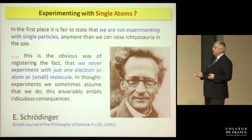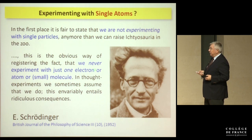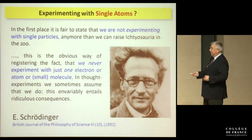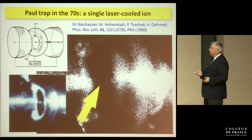Schrödinger famously said in the 1950s that it is fair to state we are not experimenting with single particles any more than we can raise dinosaurs in a zoo, and that experimenting with just one electron or atom invariably entails ridiculous consequences. However, we hopefully proved him wrong by making single atoms visible. Here is a picture of a single ion, and here are three ions in a miniaturized trap with just one millimeter ring diameter.